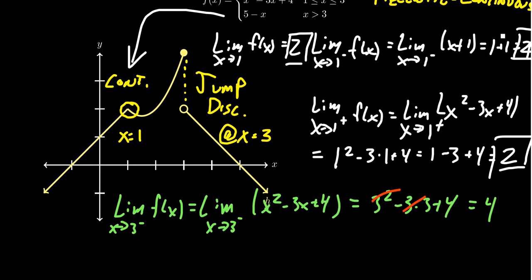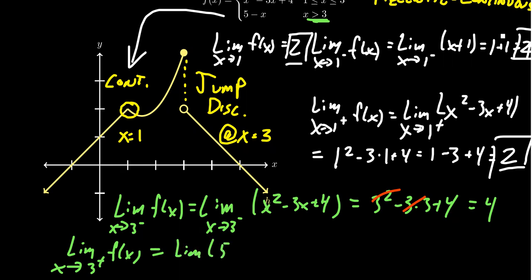For the right-hand limit as x approaches 3, if you're a little bit bigger than 3 you fall inside the domain where the function looks like the line 5 minus x. Since this is a continuous piece, we just plug in 3: 5 minus 3 gives us 2. You'll see that 2 does not equal 4, so the left limit and the right limit don't agree — the limit doesn't exist and the function is discontinuous at x equals 3.